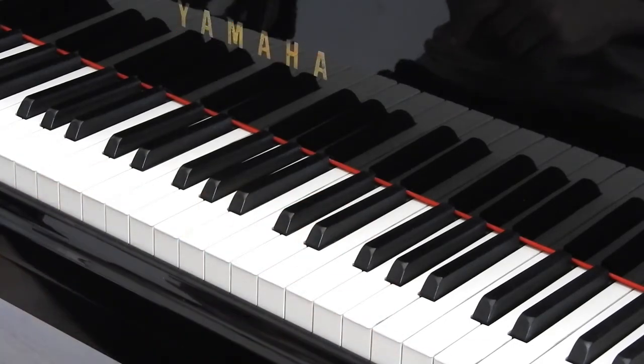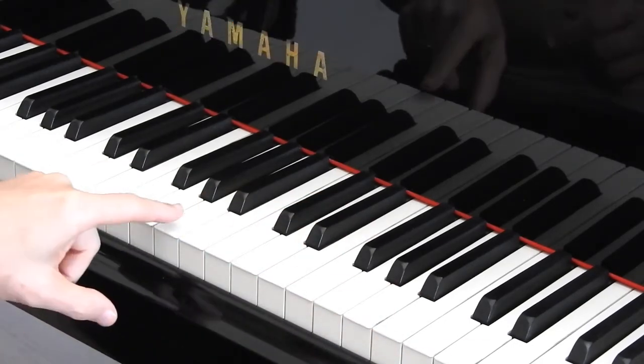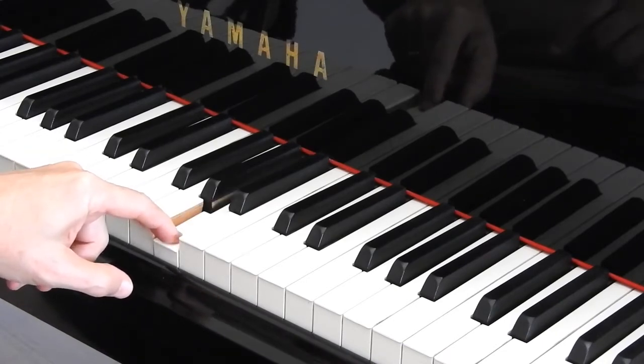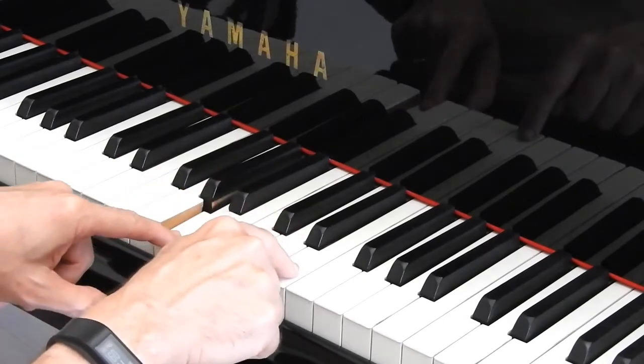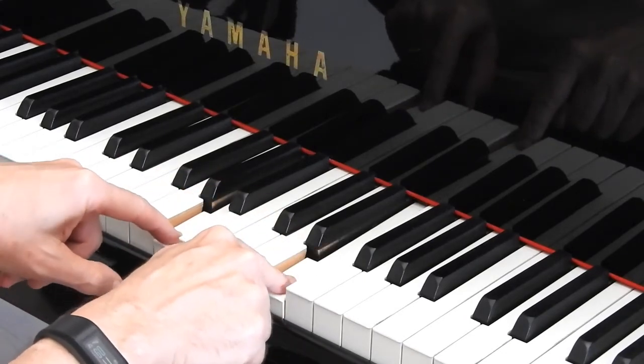Now it gets interesting when you start doing other relationships. So let's take an A, and we're going to go up a fifth, one, two, three, four, five. That note is called an E.